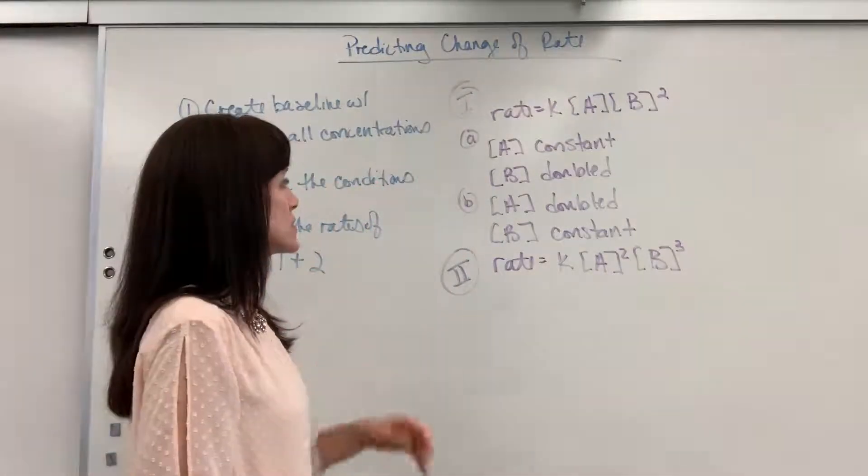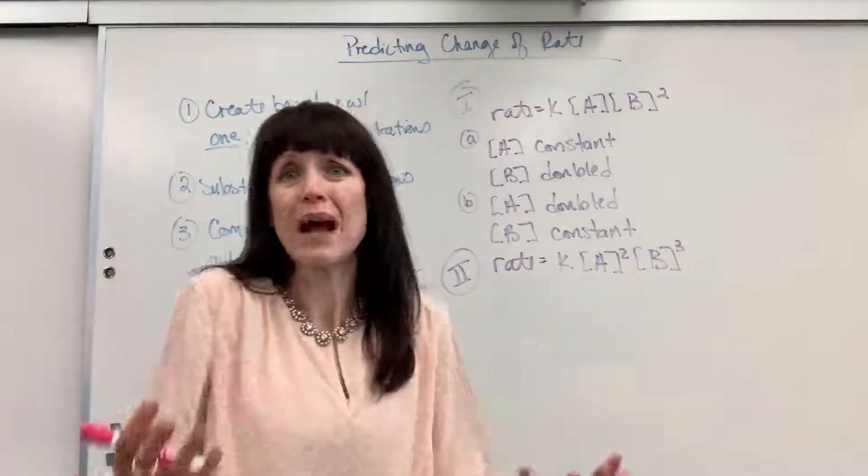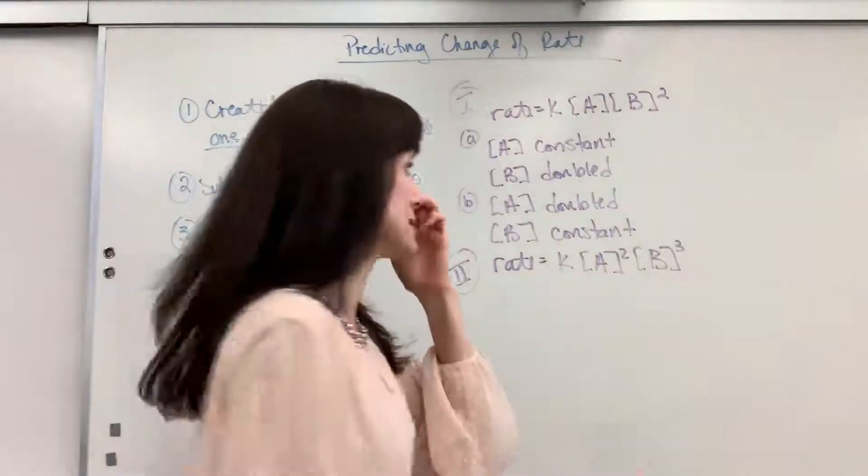So in this first example, we're going to say A is held constant and B is doubled. And we want to know what happens to the rate, predict the change in rate. So let's do step one. We're going to create our baseline.